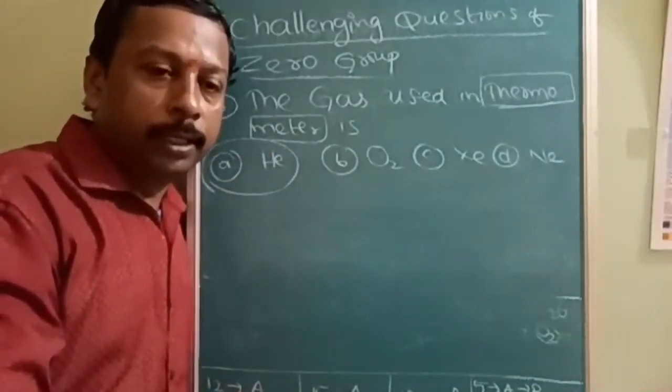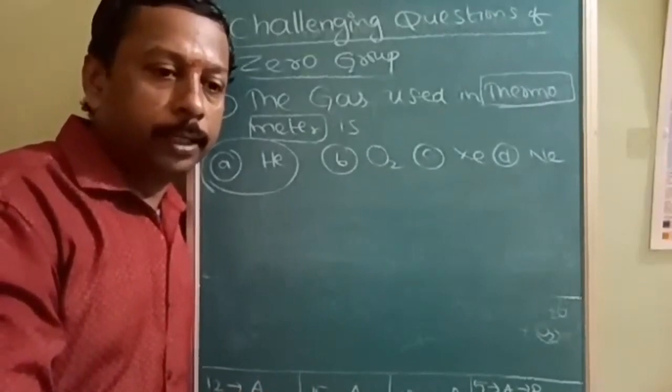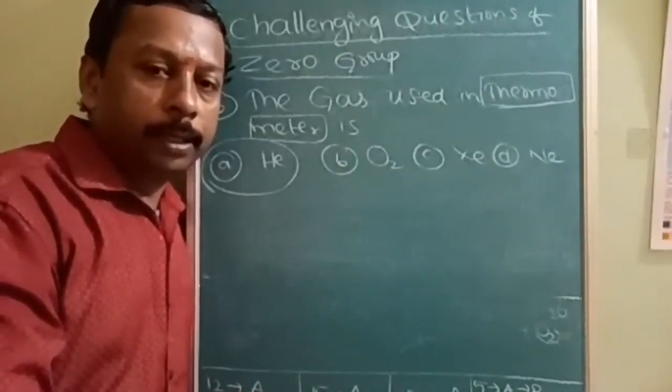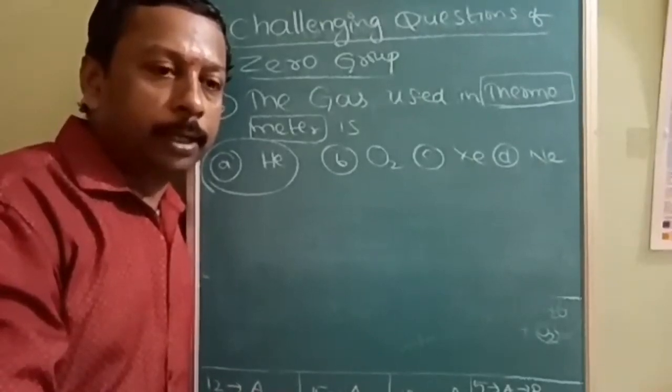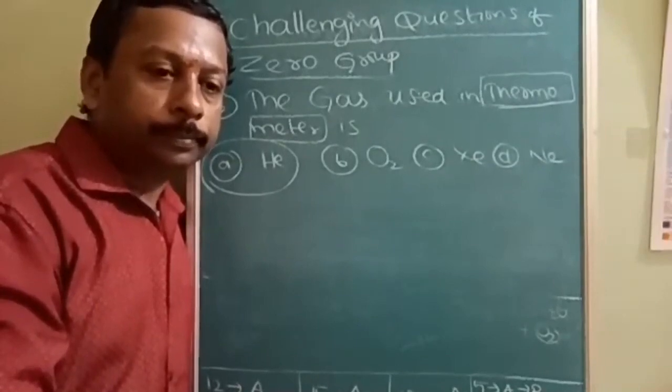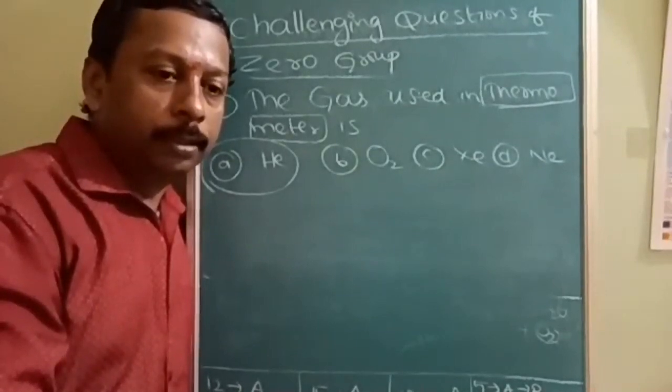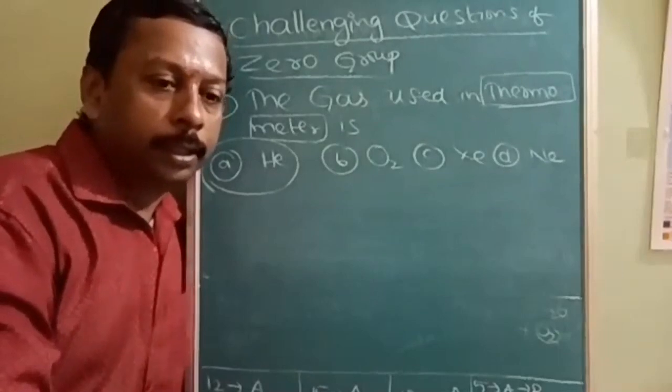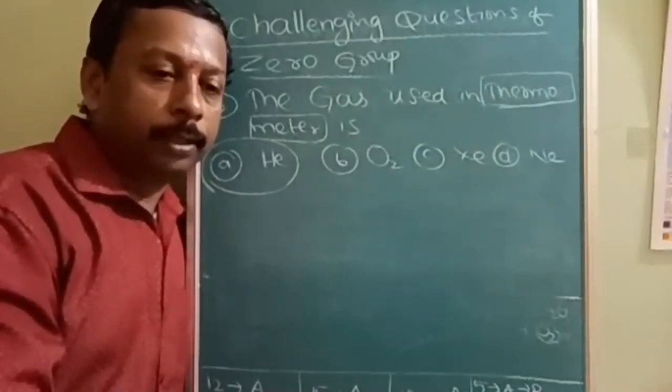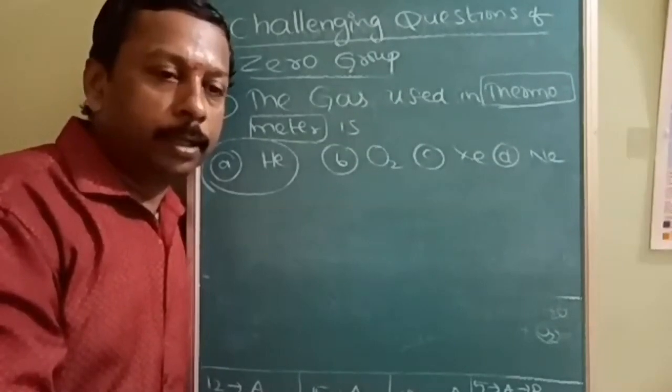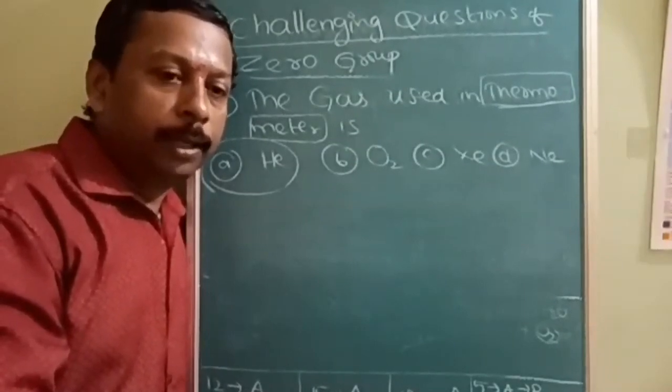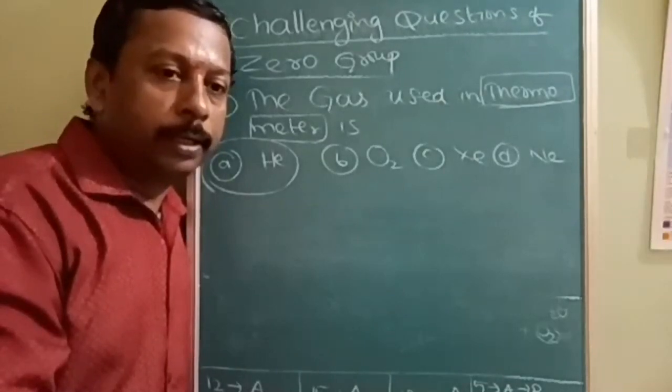Whenever you use any type of ideal metal, it may react with the oxygen available. Normally we will use mercury, but when you are measuring the high temperature, that mercury may be reacting with the oxygen. To avoid that, to provide inert atmosphere, we are filling it with the helium gas.